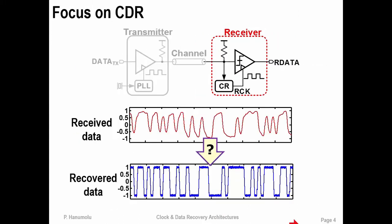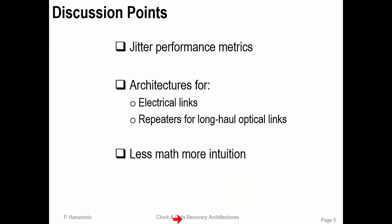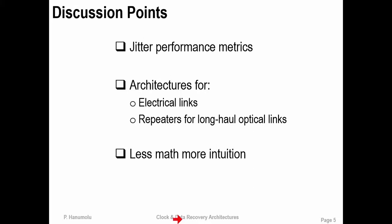To pictorially depict what I'm suggesting, the received data waveform is shown in red. The goal of the receiver — and the focus for today — is to regenerate the recovered data as shown in blue, hopefully without making any errors. With this goal in mind, the discussion points for today are: first, I will describe the important performance metrics of a clock and data recovery circuit; then briefly describe the CDR architecture suitable for an electrical link; and for the majority of the time, I will describe a CDR architecture suited for optical links. I will not focus heavily on the math, but seek to provide design intuition.